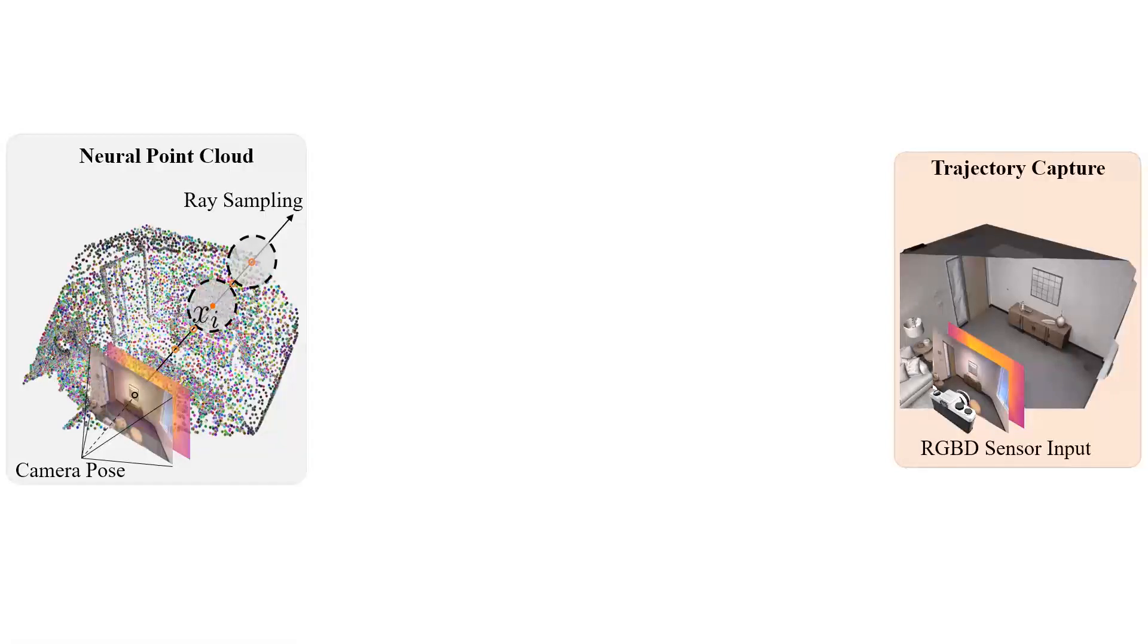For each sample point at location XI, we find the feature associated with location XI by looking for neighbors in the neural point cloud. We weigh the importance of each neighbor with the inverse distance WK.